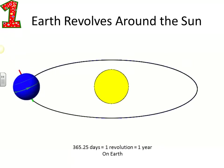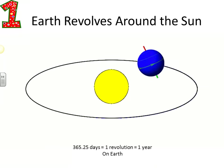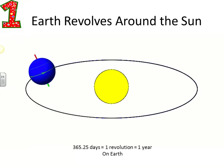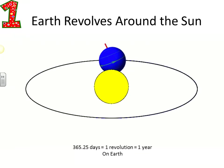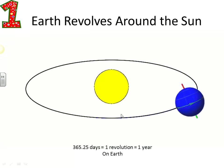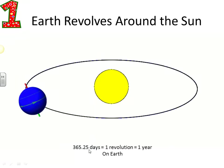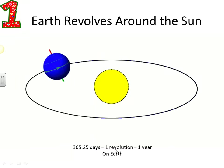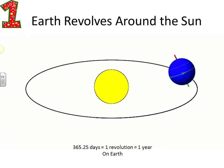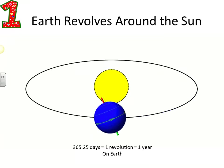Reason number one: the Earth is orbiting the sun. It's not the direct cause of the seasons, but if the Earth didn't go around the sun, the tilt of the Earth wouldn't have any impact on the seasons. The Earth orbits the sun approximately every 365.25 days — that's one revolution around the sun, which equals one year on Earth.